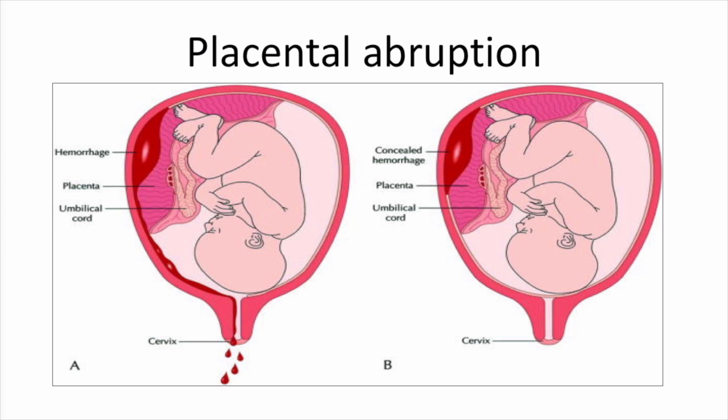Rarely, the abruption can be concealed — as you can see in the graph on the right — and the patient will have pain but without vaginal bleeding. Treatment depends on many factors, including gestational age and the maternal and fetal conditions.